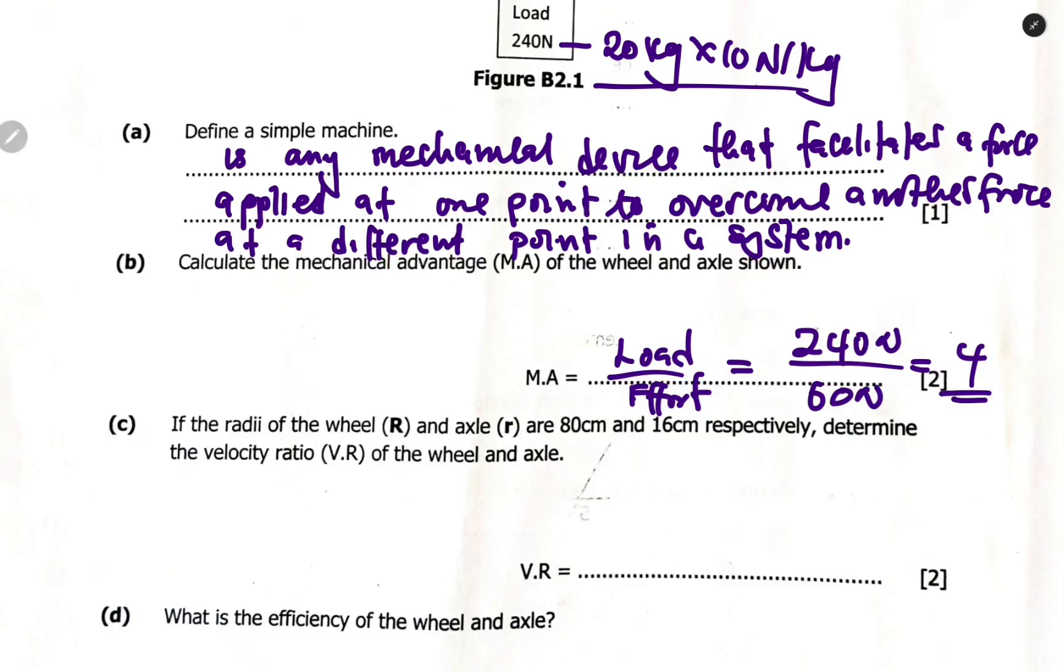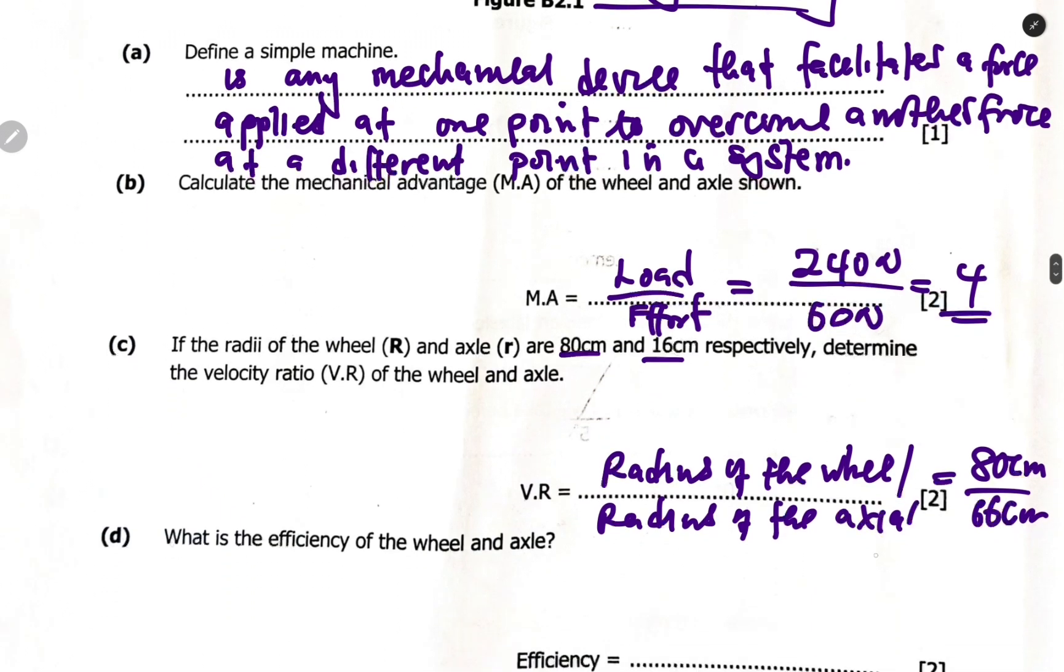For question (c), if the radii of the wheel (R) and axle (r) are 80cm and 16cm respectively, determine the velocity ratio. The velocity ratio is radius of the wheel divided by radius of the axle. So 80 centimeter divided by 16 centimeter gives you 5, no units as well.